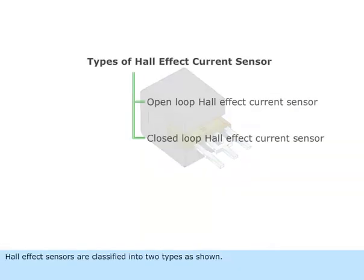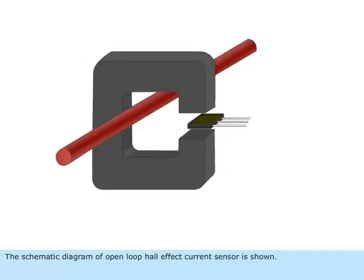Hall Effect Sensors are classified into two types as shown. The schematic diagram of open loop Hall Effect Current Sensor is shown.